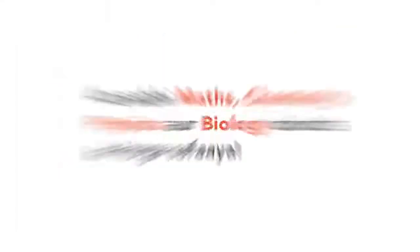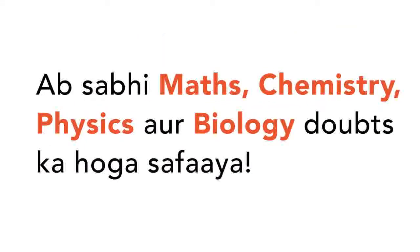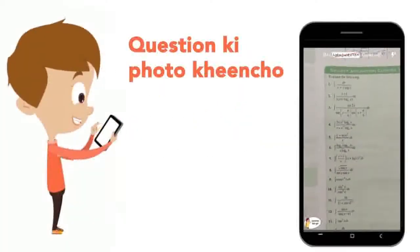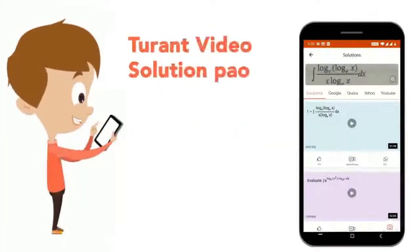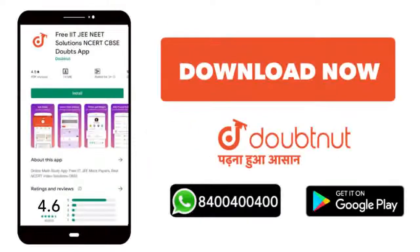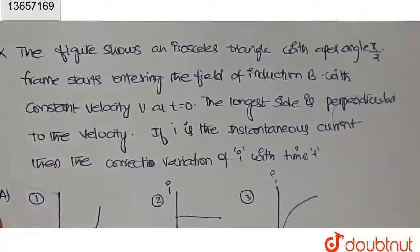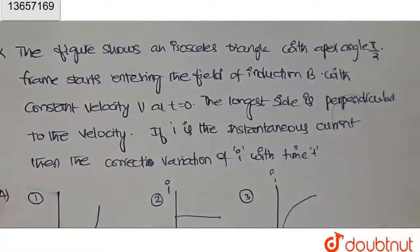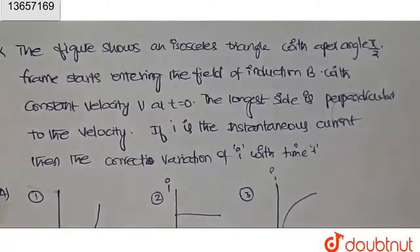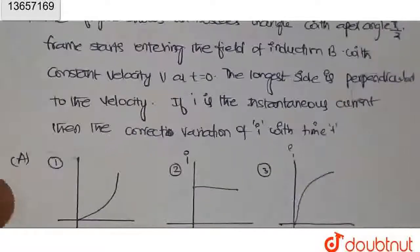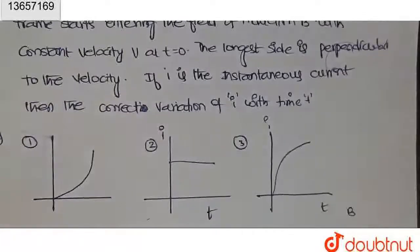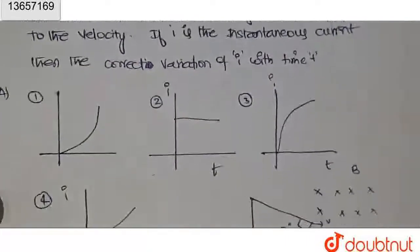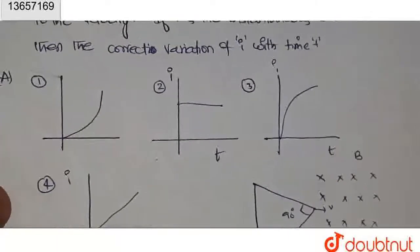Today we have a question here. The figure shows an isosceles triangle with apex angle pi over 2 starts entering the magnetic field B with constant velocity v at t equals 0. The longest side is perpendicular to the velocity. If i is the instantaneous current, then find the current relation between i and t.